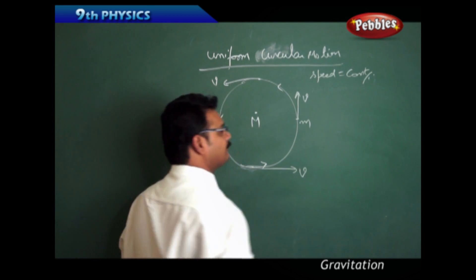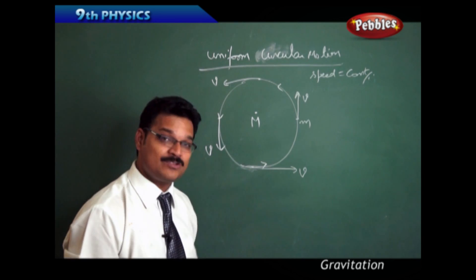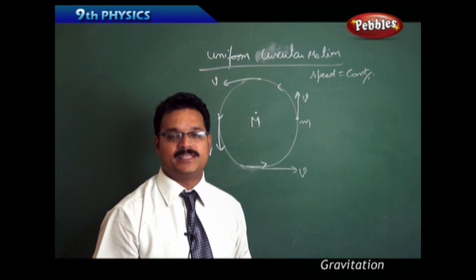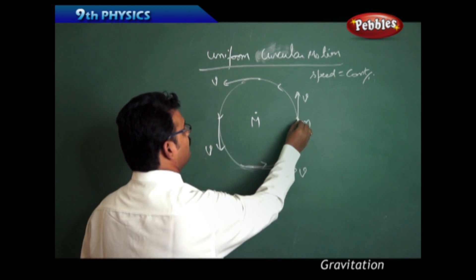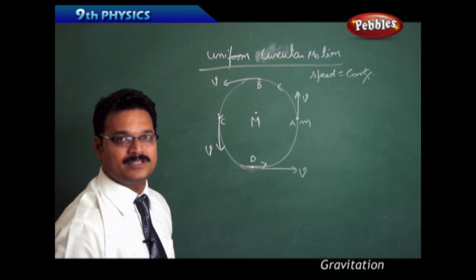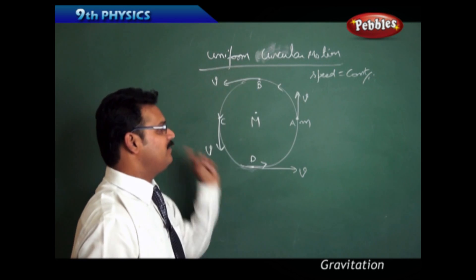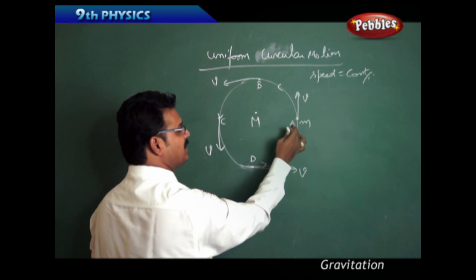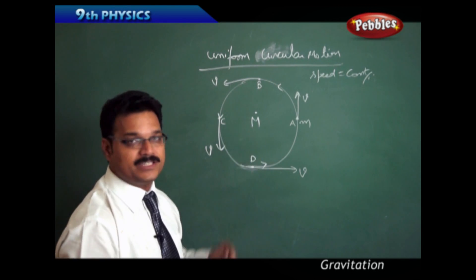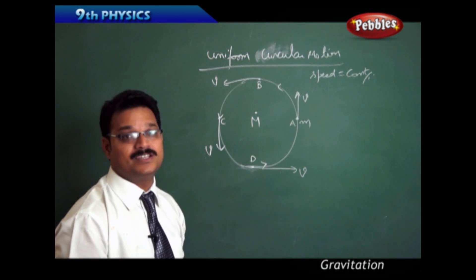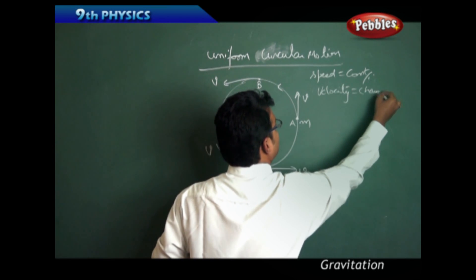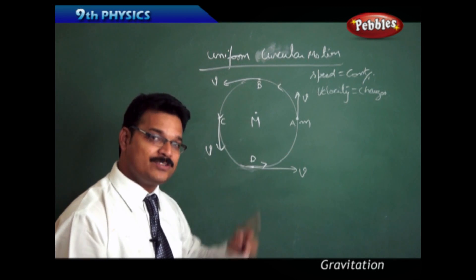But do you think that velocity is constant? Velocity is a vector quantity — it has magnitude as well as direction. At different points A, B, C, and D, the velocity magnitude is the same V, V, V, V. But the directions differ: at one point it is upward, another it is leftward, then downward, then rightward. So direction is changing. When direction is changing, we can't say velocity is constant — velocity is changing.